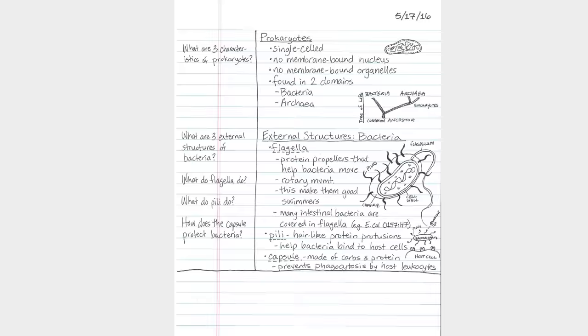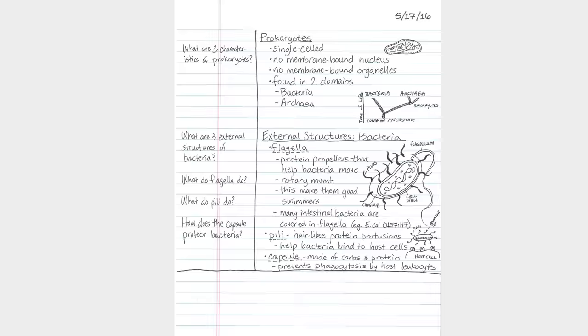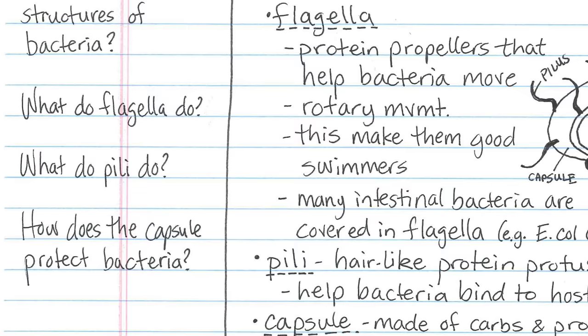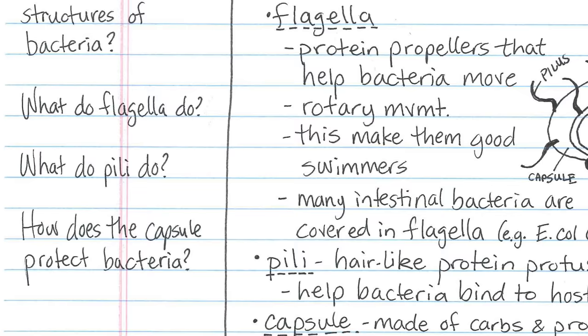In the left Q column, jot down relevant questions and keywords. Do this during your note-taking or immediately after. Writing questions and prompts helps you clarify meanings, reveal relationships, and establish continuity. This Q column will also assist you with your future reviews of the material.